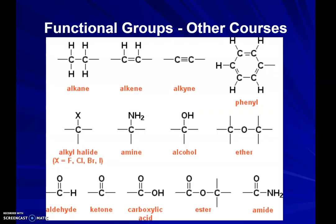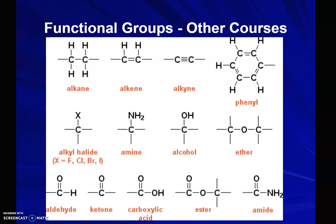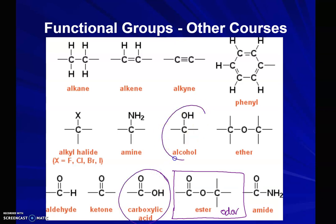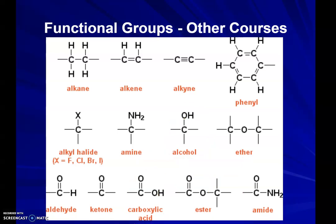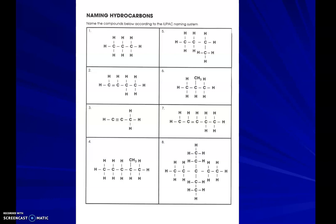There are also some functional groups which we're not really going to get to in honors chem, but we will in other courses. One of the labs we do is making an ester. An ester is an organic odor or smell, and it comes from taking a carboxylic acid and an alcohol, removing some water — dehydrating it — and making our ester. You might have heard of aldehydes, ketones, ethers, amide groups, and amine groups from biology class.